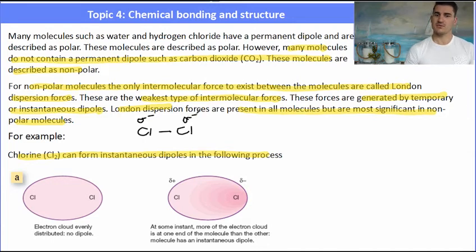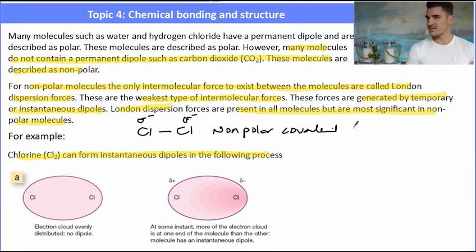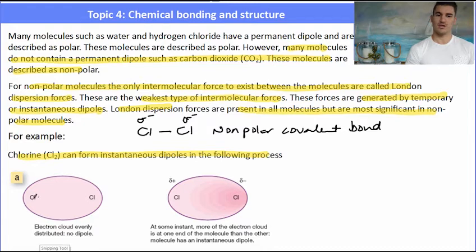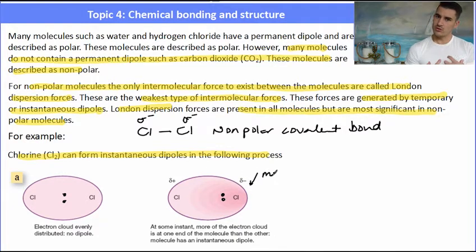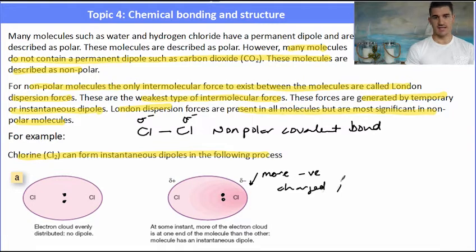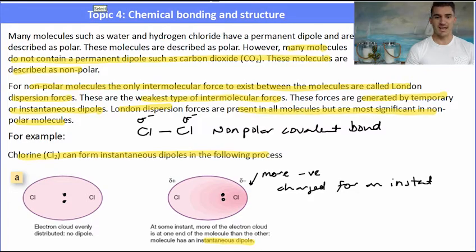A chlorine molecule has two chlorine atoms with a covalent bond. They've got the same electronegativity, so this is a non-polar covalent bond — it doesn't have a dipole. But what can happen is we can induce a dipole. If we have the chlorine molecule, the two electrons would be evenly distributed, but at some instant in time those bonding electrons might be closer to one of the chlorine atoms. In that case, we've induced a dipole — one chlorine has a greater share of the electrons, forming a partial negative charge, leaving the other end partially positively charged. We call this the formation of an instantaneous dipole.